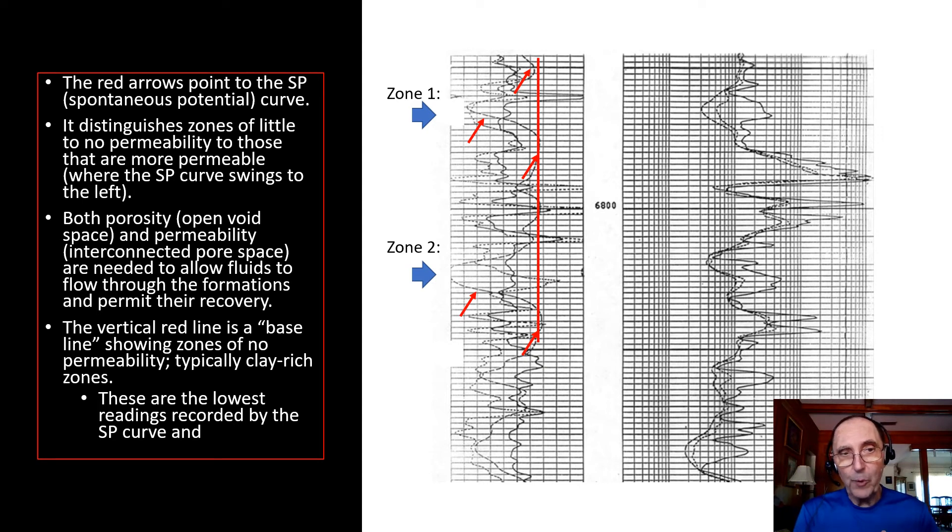Porosity has to do with the open space or void space, and permeability has to do with the interconnected pore space. The vertical red line that is shown on the log is a baseline showing zones of no permeability. These are typically clay-rich zones. These are the lowest readings recorded by the SP curve.